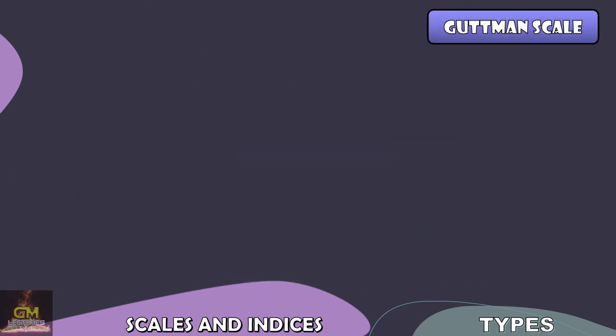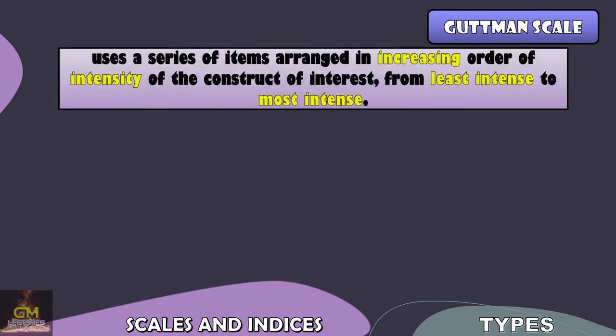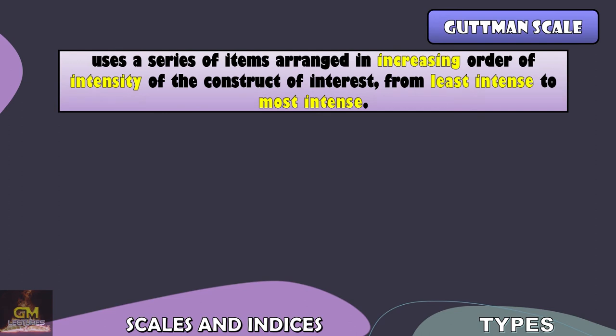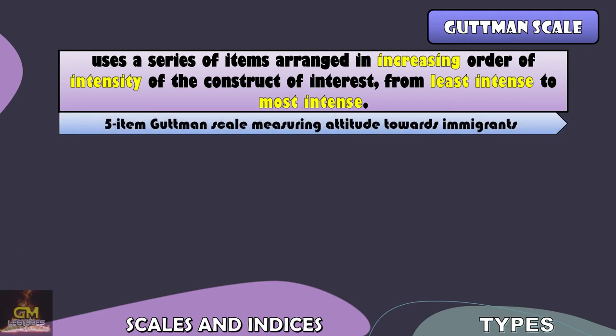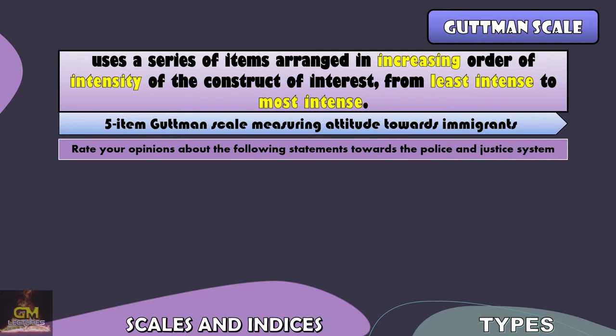Next, we have the Guttman scale. The Guttman scale uses a series of items arranged in increasing order of intensity of the construct of interest, from least intense to most intense. For example, we have a five-item Guttman scale measuring attitude towards immigrants. It would usually start with a question such as: rate your opinions about the following statements towards the police and justice system.